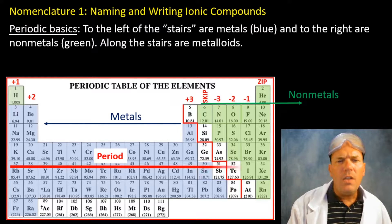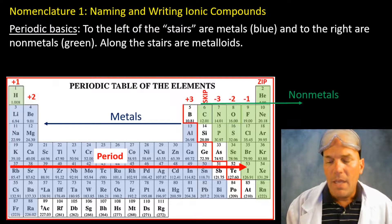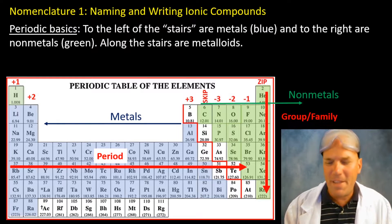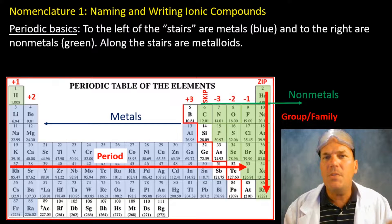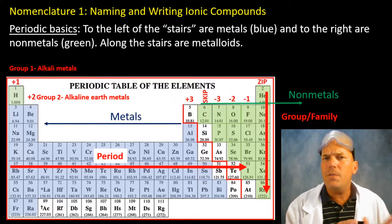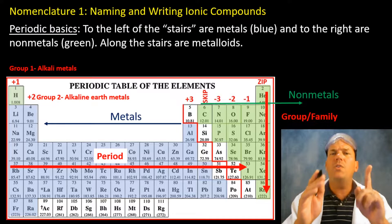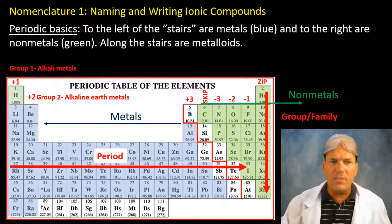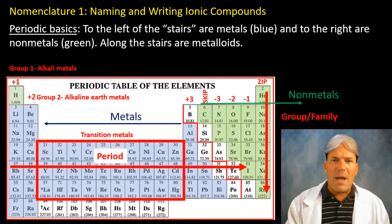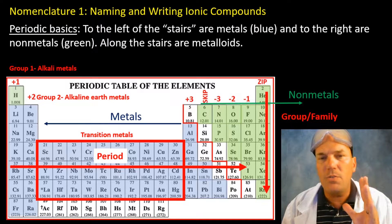As you move from left to right across the periodic table, we have something called a period. If you move vertically down the periodic table, we have something called a group or a family. There are a few groups I want you to label right now: group one, referred to as the alkali metals, and group two, referred to as the alkaline earth metals — which includes beryllium, magnesium, calcium, etc. Also boxed in red, we have the transition metals.